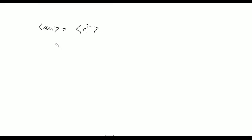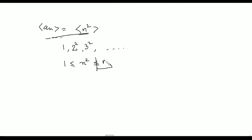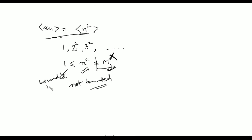Now let's see one more example to check the boundedness of a sequence. Consider a_n = n², so the terms are 1, 4, 9, 16, and so on. Clearly this sequence is greater than or equal to 1, but we cannot find a fixed number M such that the whole sequence is less than or equal to M. So we cannot find an upper bound, and this sequence is not bounded above — however, it is bounded below, and 1 is the lower bound.